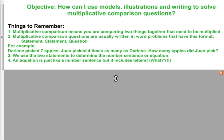The first is that multiplicative comparison means you are comparing two things together that are going to be multiplied. Second, multiplicative comparison questions are usually written in word problems that have this format: statement, statement, question. For example, Darlene picks seven apples. It ends in a period, that means it is a statement. Juan picked four times as many as Darlene. Another period, that's a statement. And how many apples did Juan pick? Ends in a question mark. So we followed the statement, statement, question format.